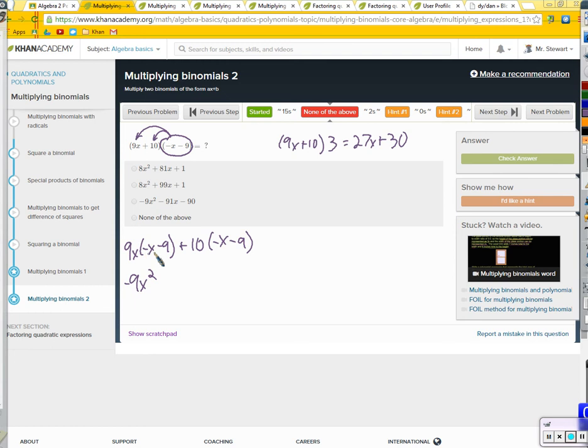What's negative 9x times negative 9? Positive or negative? Negative. It's negative 81x. Plus a 10 times negative x. What's positive 10 times negative x? Negative 10x. 10 times negative 9. Negative 90.